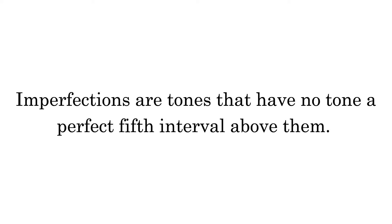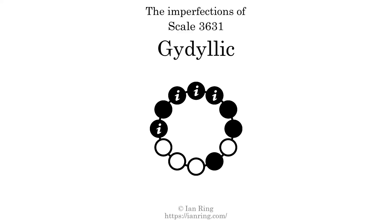Imperfections are tones that have no tone a perfect fifth interval above them. This scale has 4 imperfections, at the indicated positions.